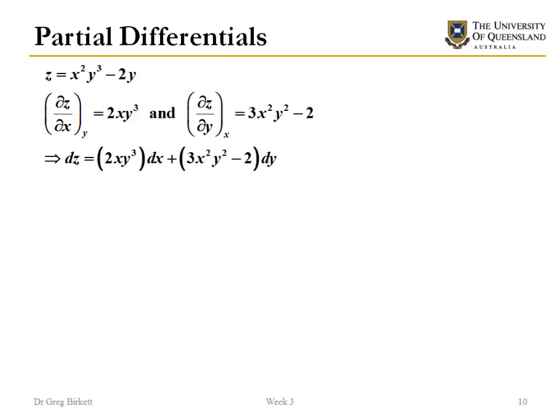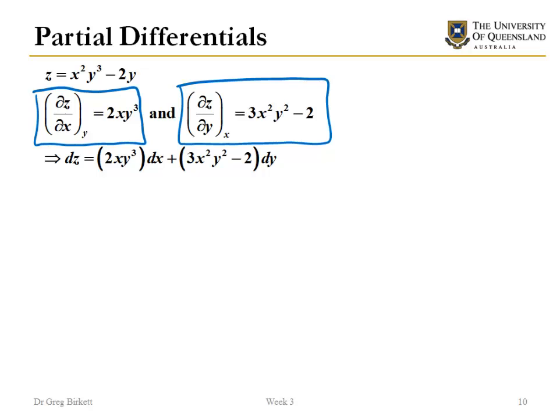What I want to do now is calculate what the change in z is if I have a change in x and a change in y. I'm defining the partial differentials so that I'm able to define the total differential. The partial differential with respect to x keeping y constant is given, and the partial differential with respect to y is given by a separate equation. Substituting both of those into the expression gives me the equation for the total differential for z.